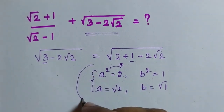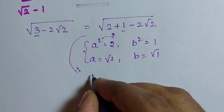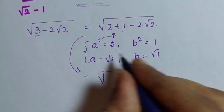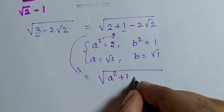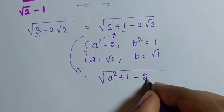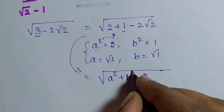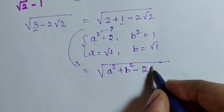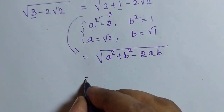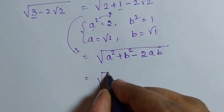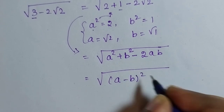Therefore this equation becomes the root of a² plus 1 minus 2ab. Since 1 can be written as b², this is a² + b² − 2ab, which is the formula for the root of (a − b) whole square.